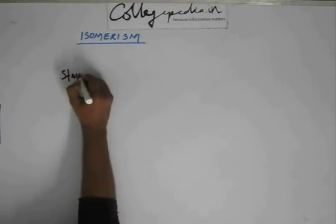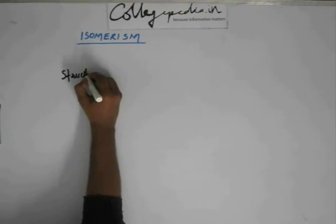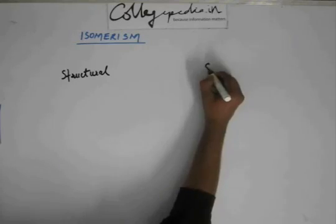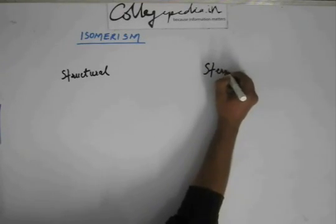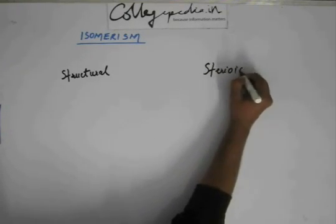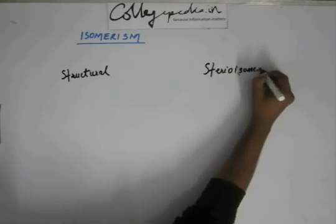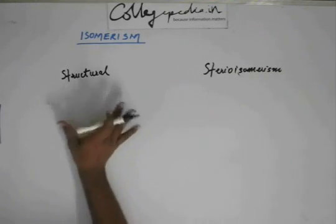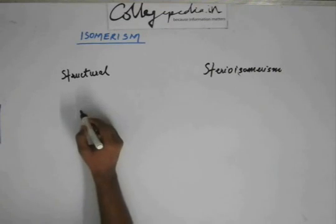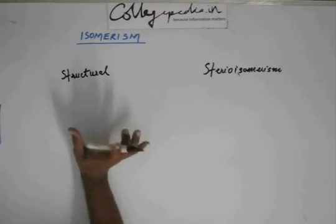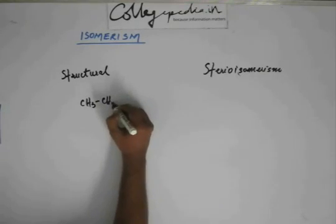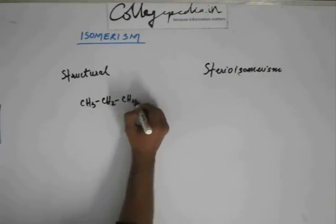Isomerism is broadly classified into two categories: one is structural isomerism and the other is stereo isomerism. The basic difference between them is that in structural isomerism, the connectivity of atoms changes. For example, if I have a straight chain of four carbons — butane, generally termed as n-butane — this butane can have an isomer.